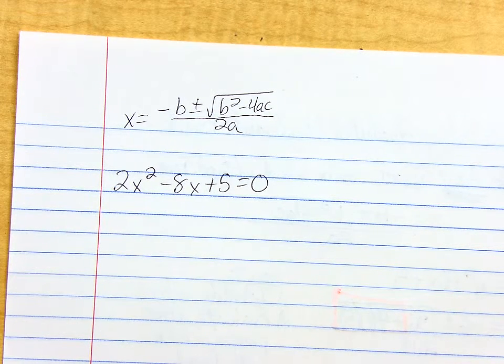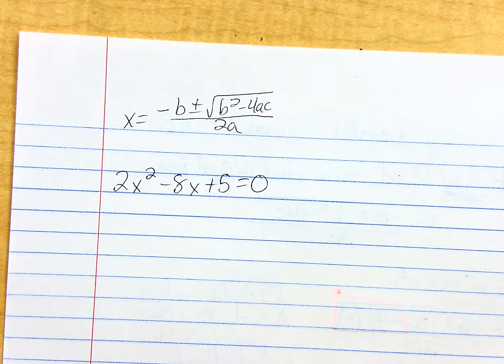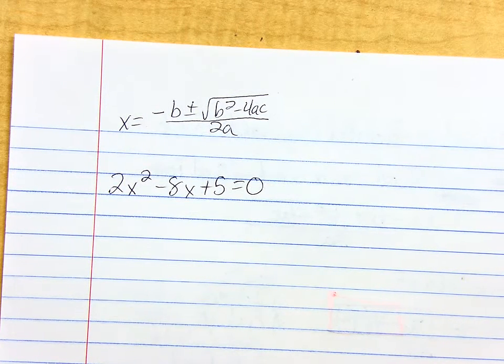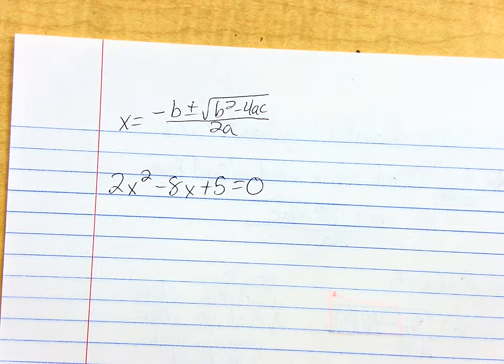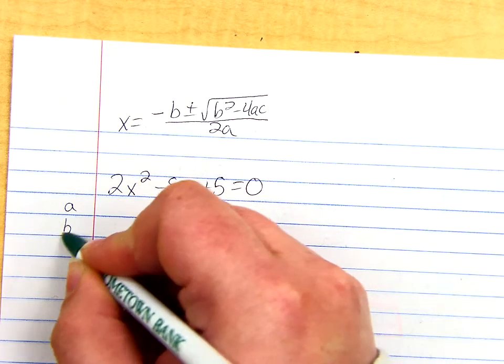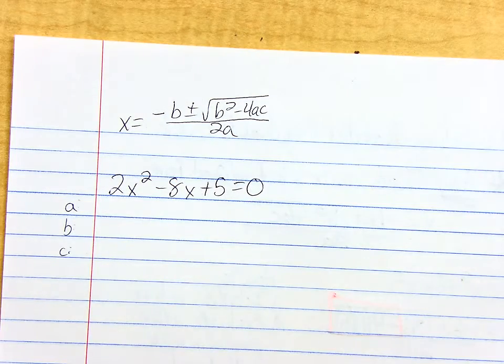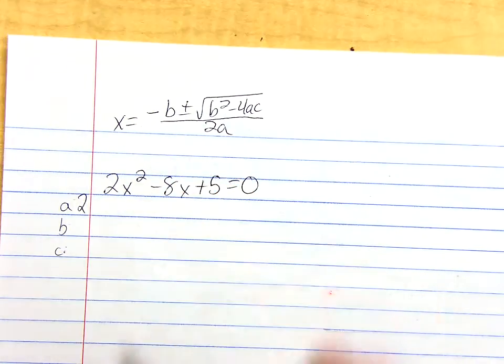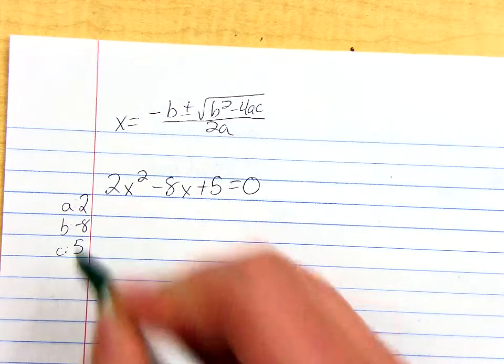So step one, we're going to identify what A, B, and C are. I like to list them over on the side: A, B, and C. What is A in this case? Two. What's B? Negative 8. And C is? Positive 5.